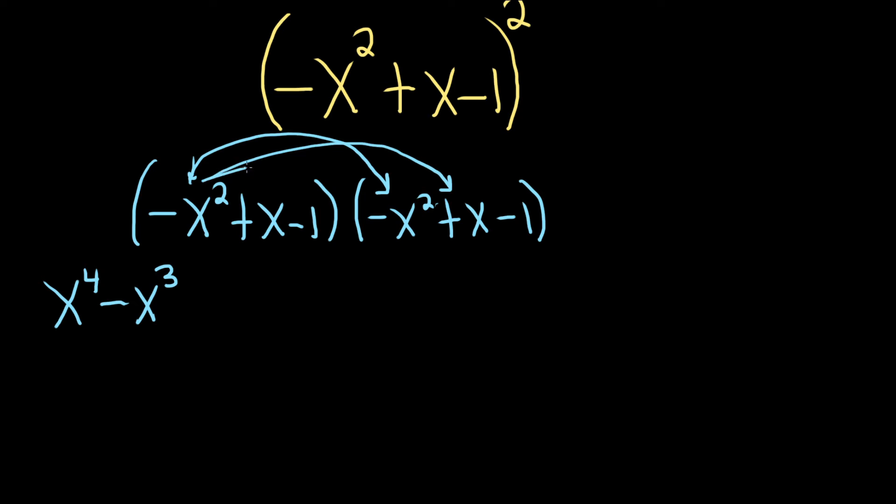And then negative x squared times negative 1 is going to give us a positive x squared because they're both negative.